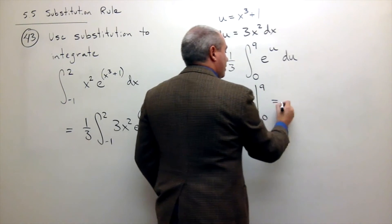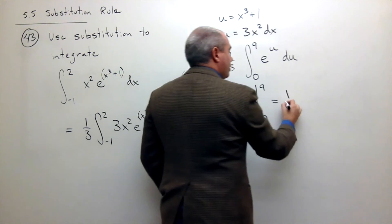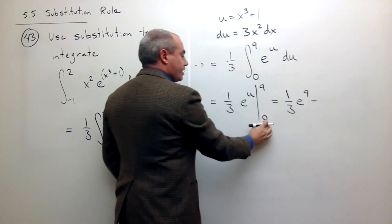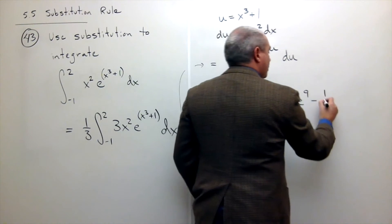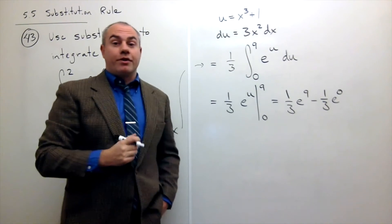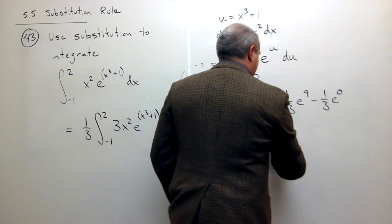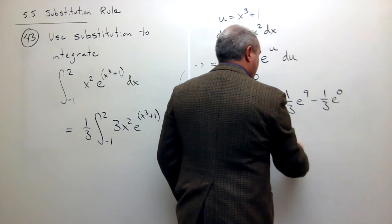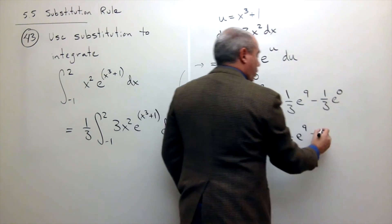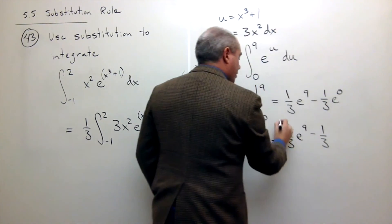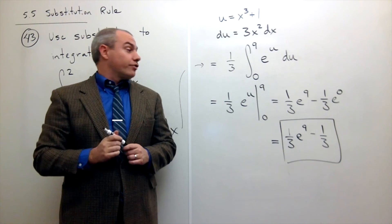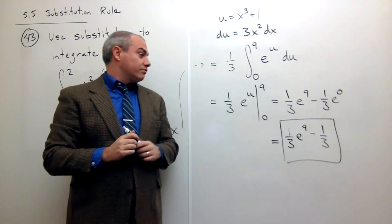I can go ahead and plug things in, and I get 1 third e to the 9th minus, plug in 0, and I get 1 third e to the 0. Of course, e to the 0th power is 1, so I can rewrite this again. This is 1 third times e to the 9th minus 1 third times 1, so just minus 1 third. And that is our antiderivative, or the solution to our integral.